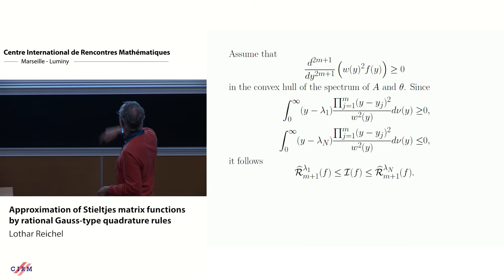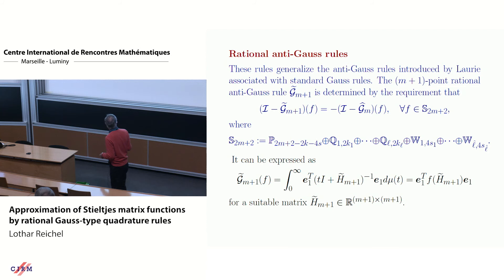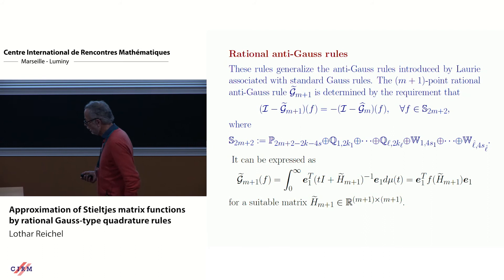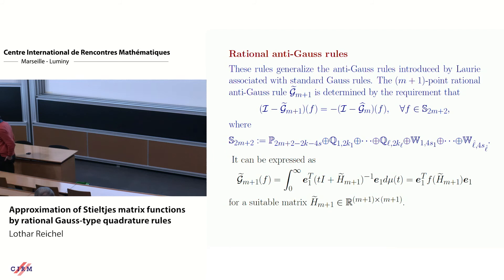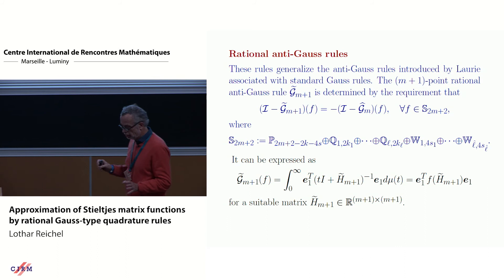And so we can get the remainder formula, everything carries over. And then if we know that this weight function w squared times f and the 2M plus first derivative is of constant sign, then we can tell what the remainder formula is. Now, of course, is this gonna happen that it is of constant sign? Well, not always. So we also look at other quadrature rules. For instance, some years ago, Dirk Laurie introduced anti-Gauss rules. The beauty of these is it's just linear algebra. You don't need to know the sign of any derivatives.